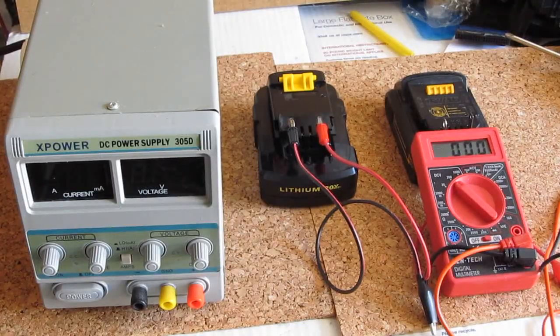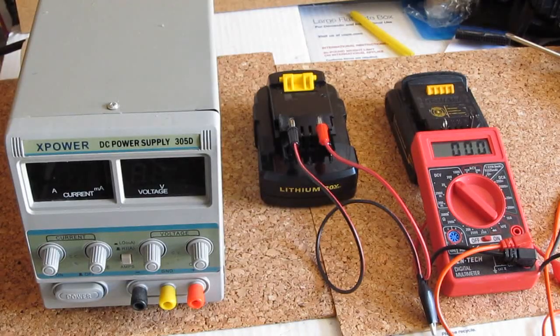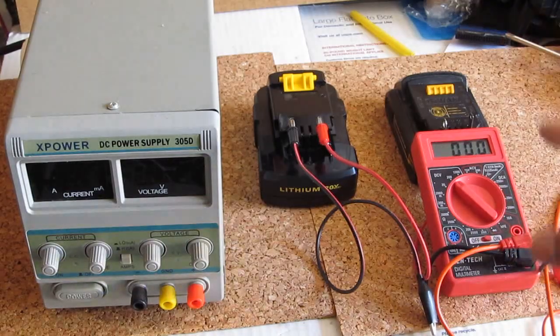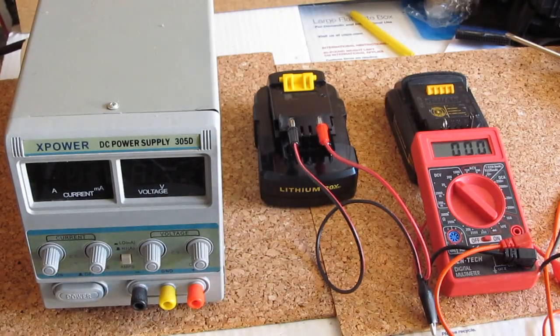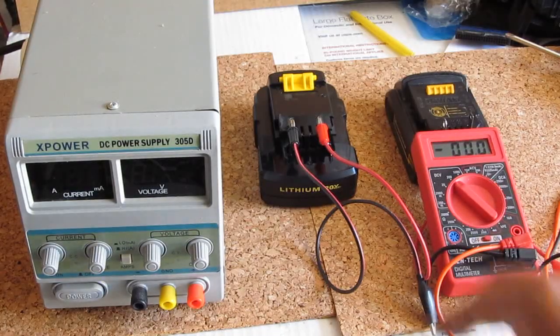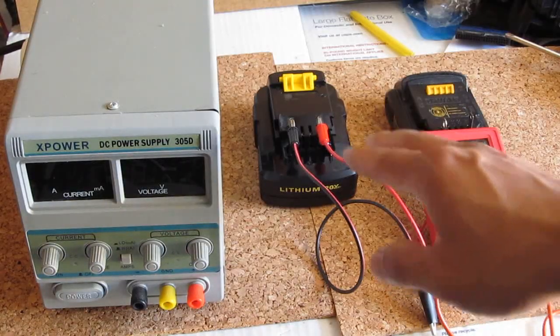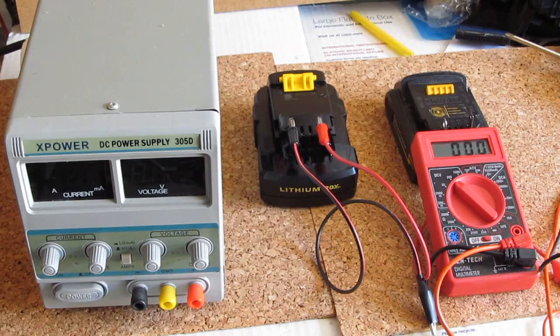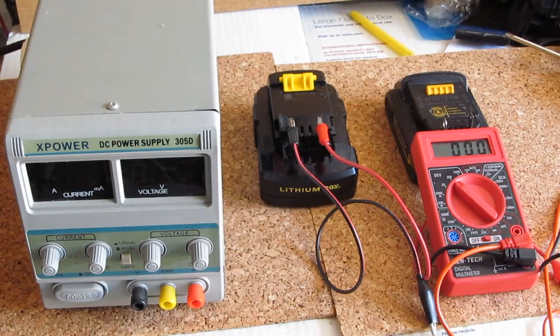All right, so there are a few ways that you can do this. You can basically just use any power source that's higher than the voltage of the dead battery and hook it up to raise the dead battery's voltage high enough so that the charger can recognize it.